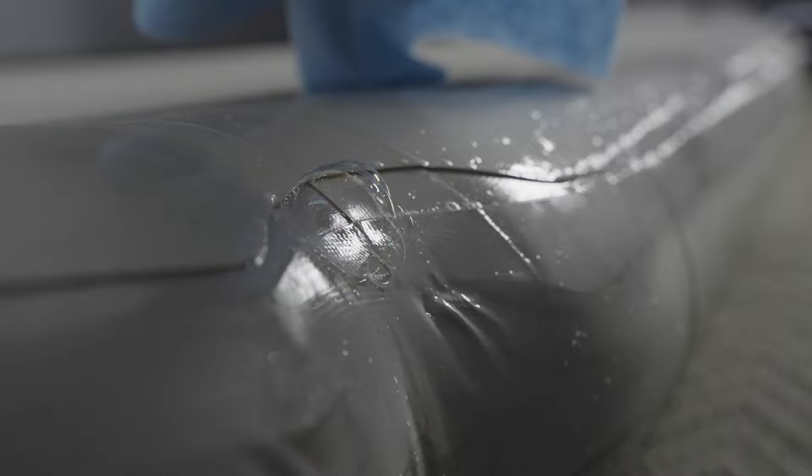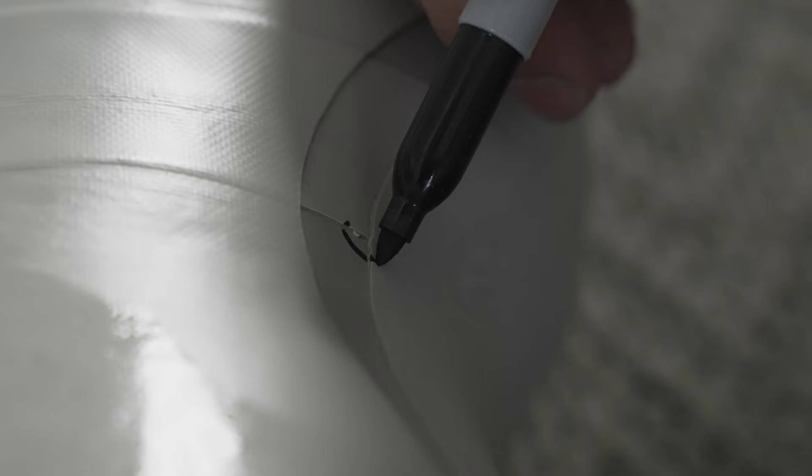Once you find the leak, wipe away the soap and make sure the repair area is as clean as possible. Mark the location of the leak with a sharpie.